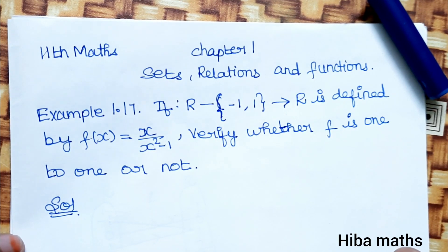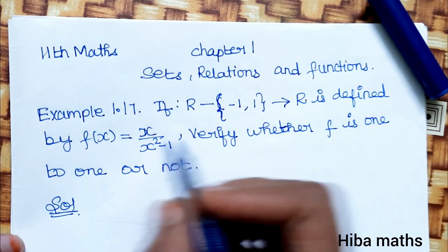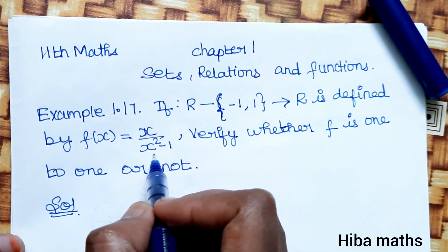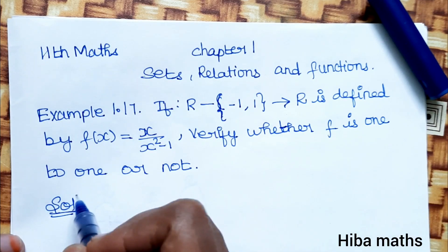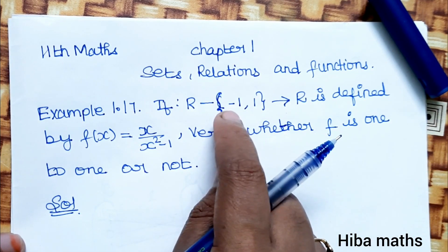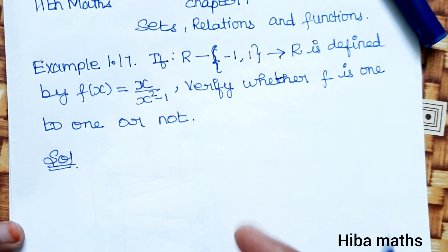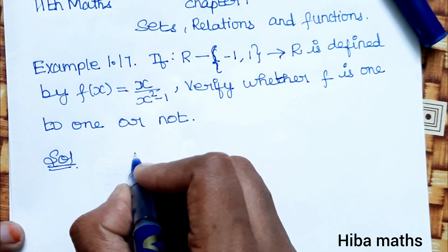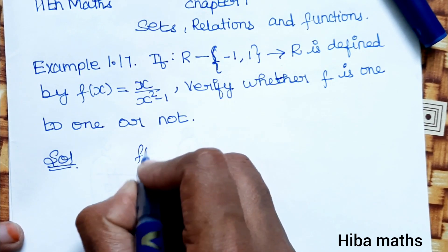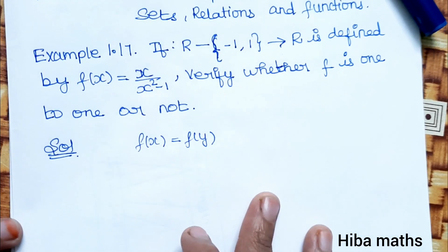Hello students, welcome to Heba Max 11th standard. Chapter 1: Sets, Relations and Functions, Example 1.17. If the domain R minus {-1, 1} is given, f of x equals x divided by x squared minus 1. Verify whether f is one-to-one or not. The function maps R to R, and we check f(-1) and f(1).